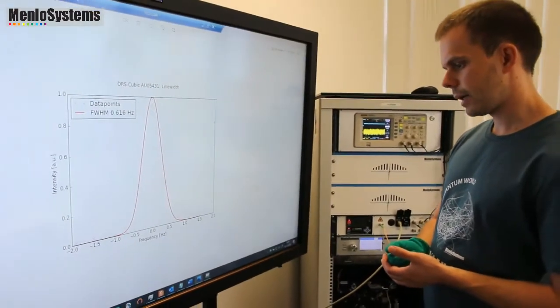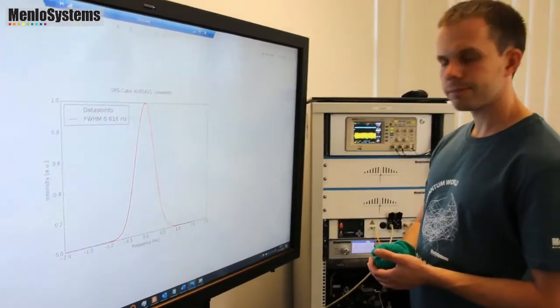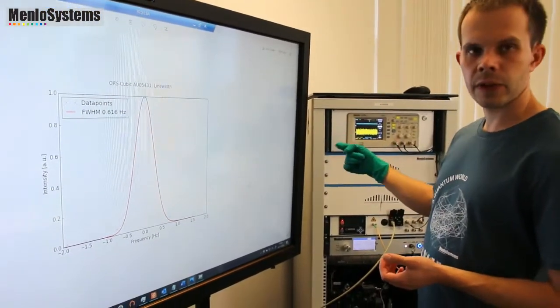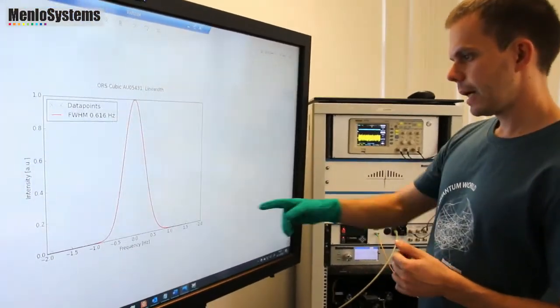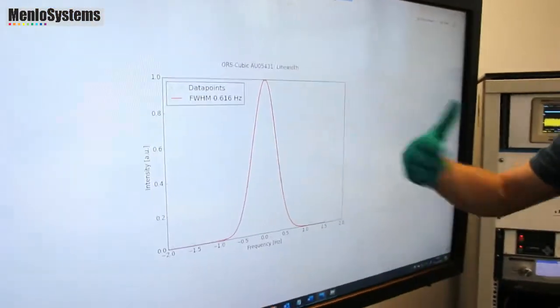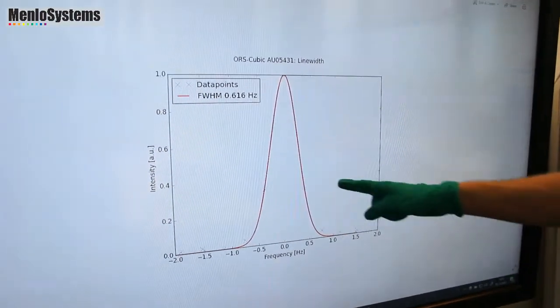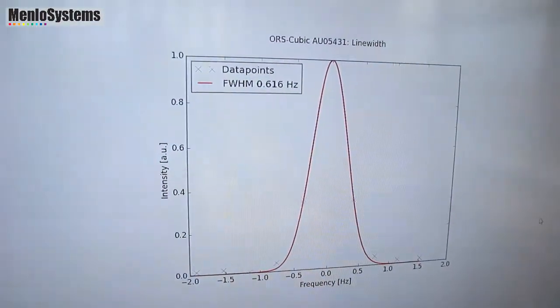So the way we did this measurement is we mixed it down to even lower. Say 5 kilohertz. Then we have an AD card. That gets that sine wave. Then we run a fast FFT. And basically this is the line width plot you get out. So here we have a line width of 0.6 hertz roughly.